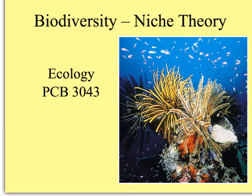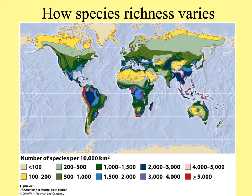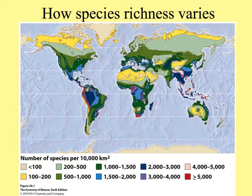Let's look at patterns in biodiversity and how niche theory can help us understand or explain these patterns. Species richness — the number of species in a community — is much greater in tropical areas. You can see in this figure the blue, purple, and red colors are the most intense around the equator.